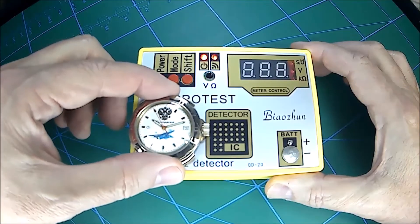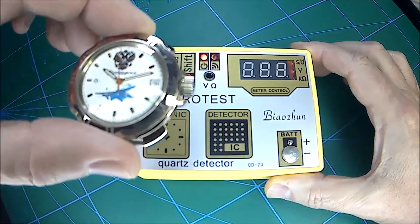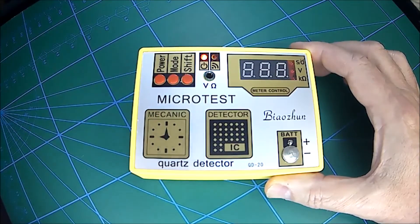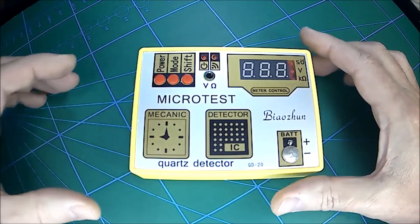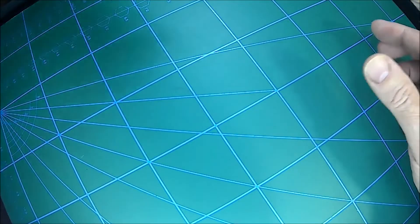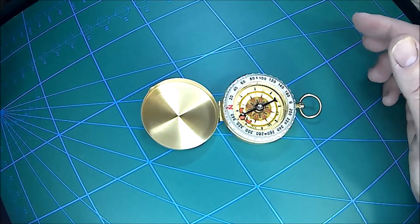Then slowly lift the movement up and away from the demagnetizer, and then turn off the QD20. Now check the movement again using the compass to see if there's any deflection.